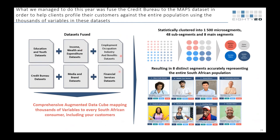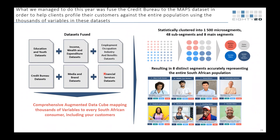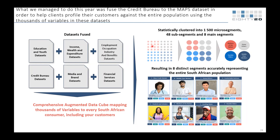What we did is fuse a bunch of datasets together, most importantly fusing them to the credit bureau data. The credit bureau covers 20 to 25 million people in South Africa, giving representation across the entire country — you can completely forget about the sampling problem. This allows you to link thousands of variables from MAPS and other datasets to an individual.